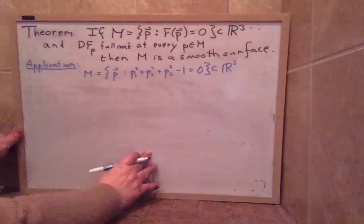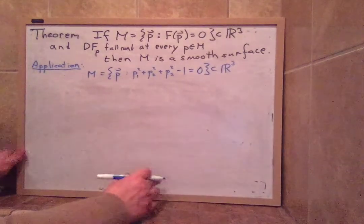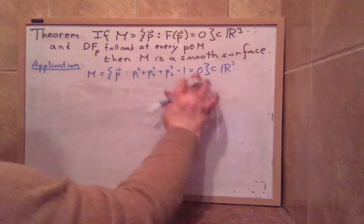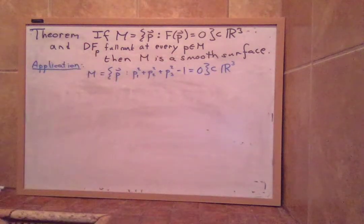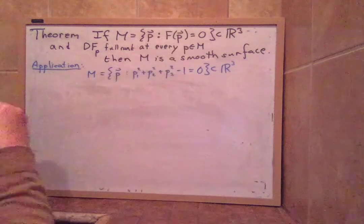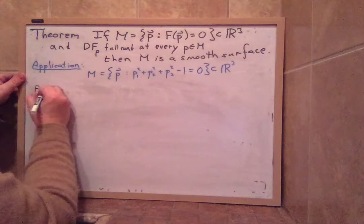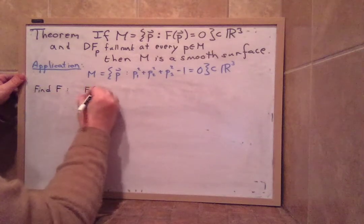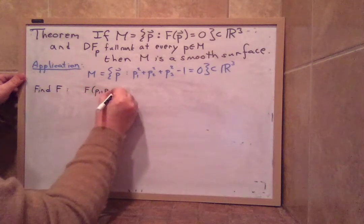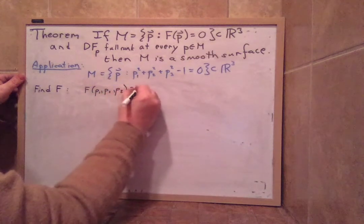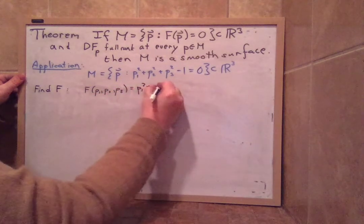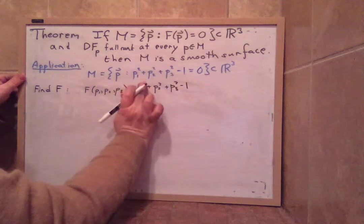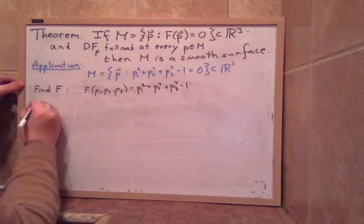The sphere here, the sphere is p1 squared plus p2 squared plus p3 squared equals 1, so I subtract the 1 to make it equal to 0. And once we've done this we need to figure out our function f. So we find f and when we do that we get that f of p1, p2, p3 is actually equal to p1 squared plus p2 squared plus p3 squared minus 1. So that's our function f and now we have to find df.